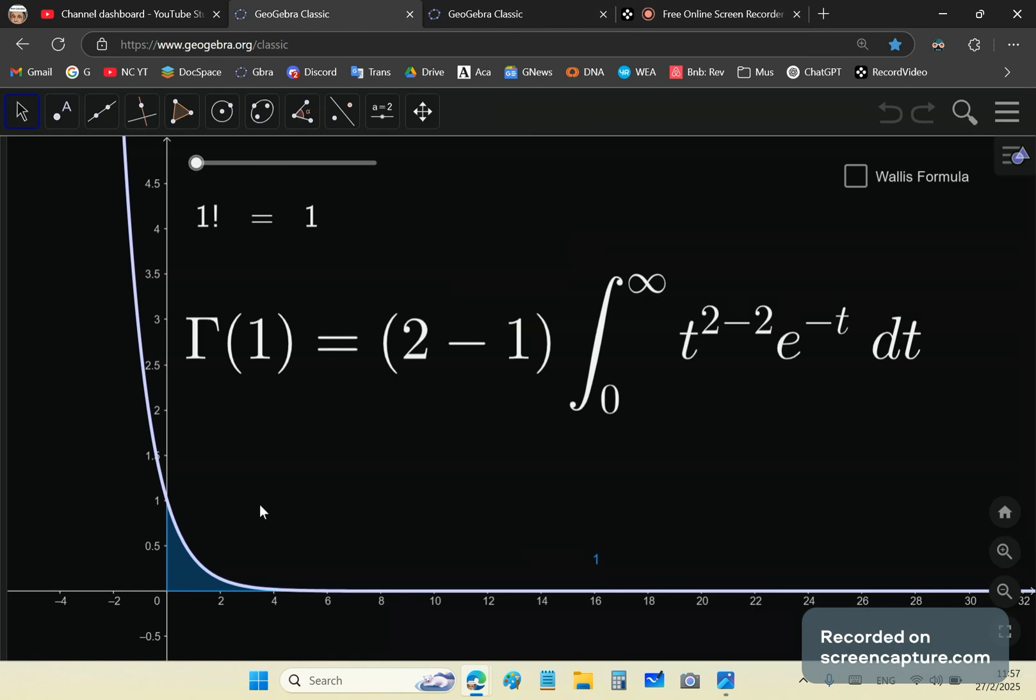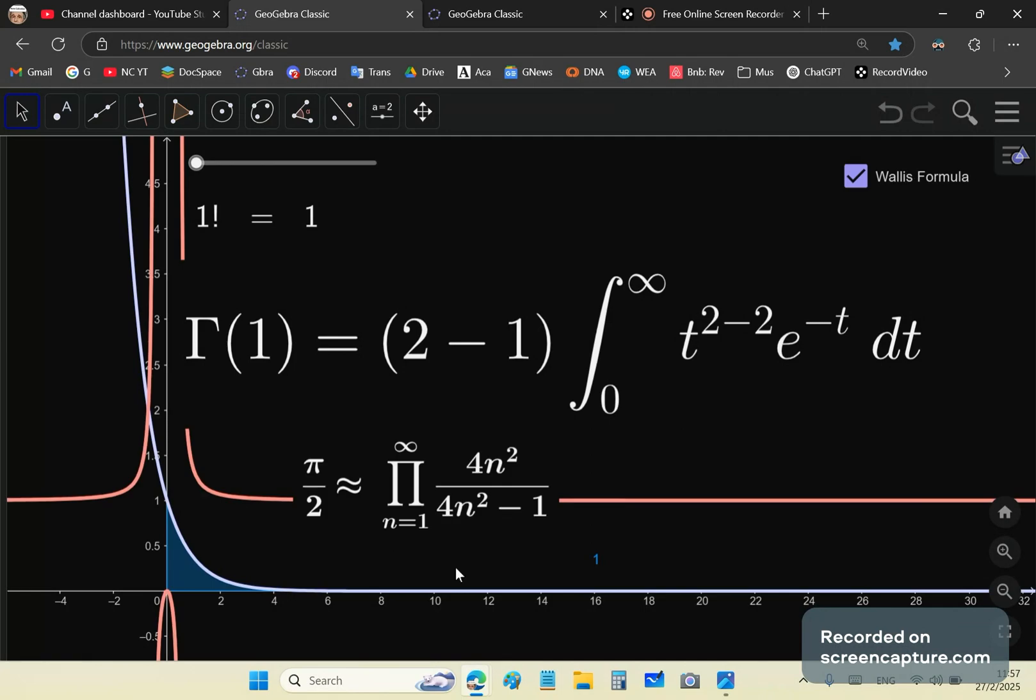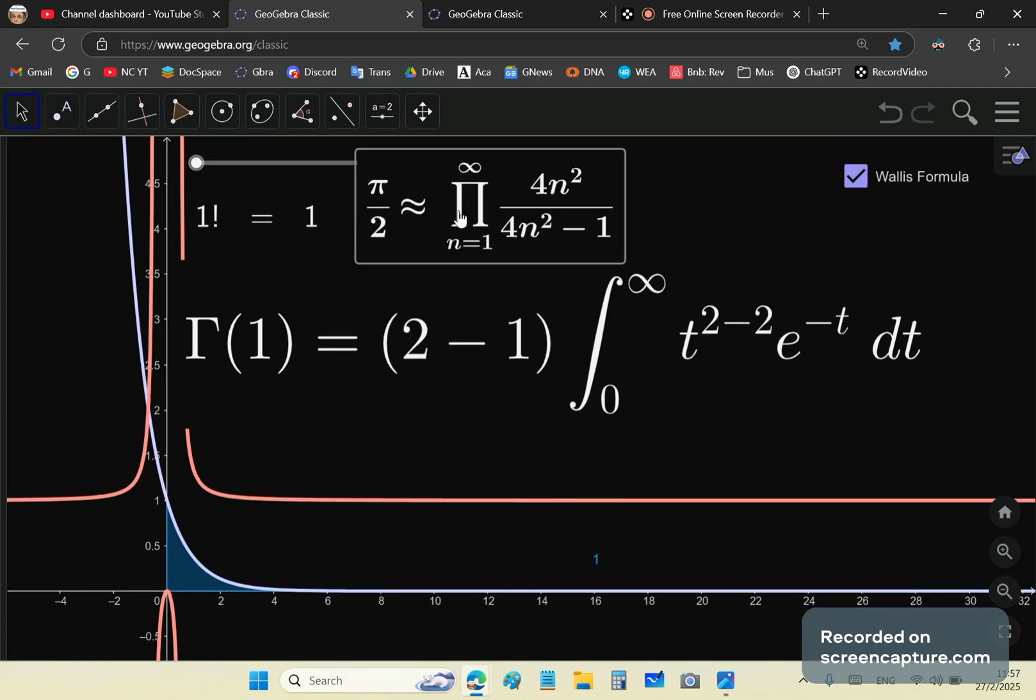Now, at first there wasn't a connection between the gamma function and Wallis's original formula. Wallis came up with something called the product formula. So what does the product formula say? It says this here, that pi over 2 can be approximated using this. Of course, infinity is a rubbish symbol. It shouldn't be infinity there, but anyway.